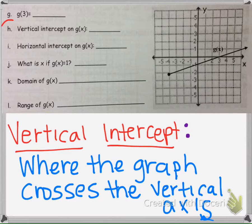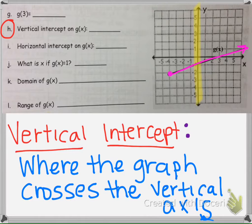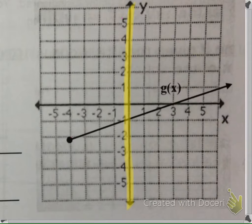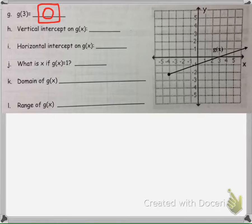The next question asks us to find the vertical intercept — where does this graph cross the vertical axis? The vertical axis is typically the y axis if we're using x and y. So we want to know where does this pink line cross this yellow y axis here. This line will cross the vertical axis right here, and that point is (0, negative 1). So our vertical intercept is (0, negative 1).